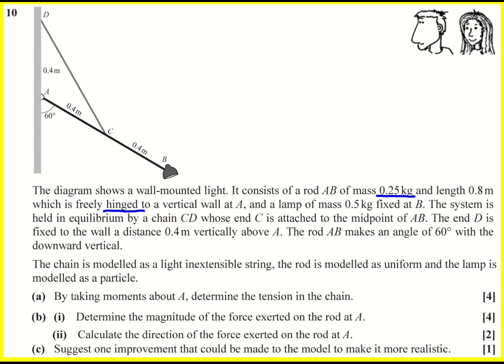Okay that is going to come back in and a lamp of mass 0.5 kilograms is fixed at B. So let me add that on as a force, 0.5G. That is going to be the weight. The system is held in equilibrium by a chain CD whose end C is attached to the midpoint of AB.